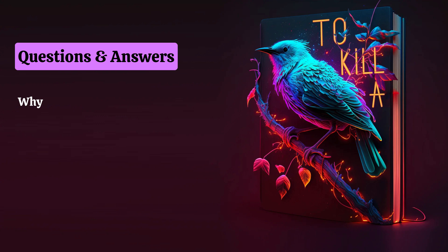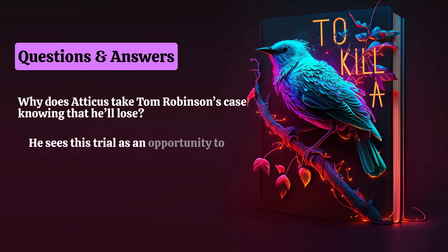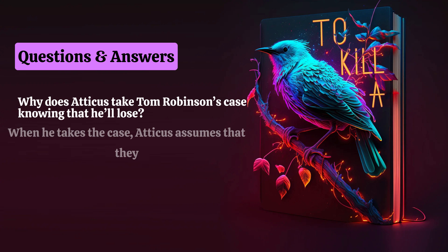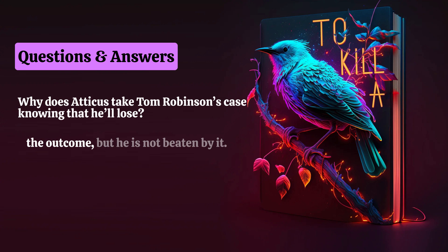Why does Atticus take Tom Robinson's case knowing that he'll lose? Atticus accepts the case out of personal integrity and a firm belief that the racist ways of the Deep South will slowly but surely change over time. He sees this trial as an opportunity to help make that historic shift of attitude, even if it is just a small step. When he takes the case, Atticus assumes that they will lose the trial, but he believes they have an excellent chance in the appeal process. The people of his community trust him to do the right thing, and he does. After the trial is over, Atticus feels discouraged by the outcome, but he is not beaten by it.